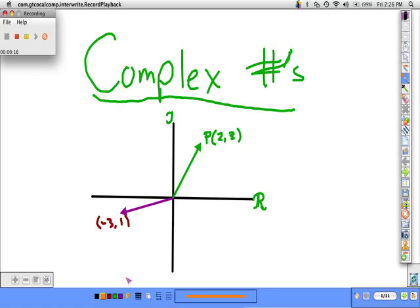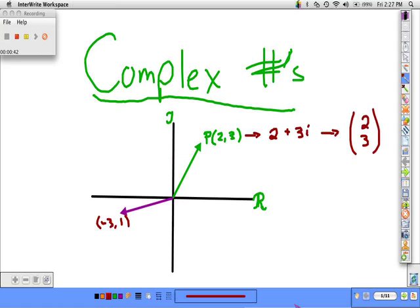The ordered pair represents the complex number with 2 as its real part and 3 as its imaginary part. We could also think of this complex number as a vector emanating from the origin and terminating at point P. This other point, negative 3, 1, represents the complex number -3 plus i.